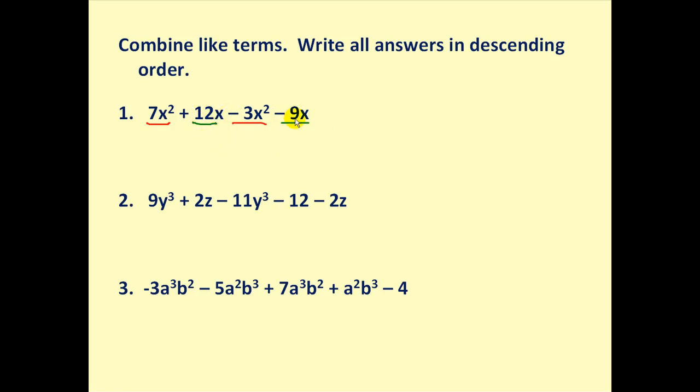So you could almost think of this as the x's or apples and the x squareds or oranges, whatever works to identify the like terms. So 7x squared minus 3x squared would be 4, because 7 minus 3 is 4, with the variable part staying the same. And the x term would be 12x minus 9x. Well, 12 minus 9 would give us 3, so plus 3x.